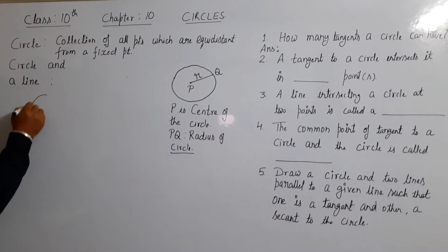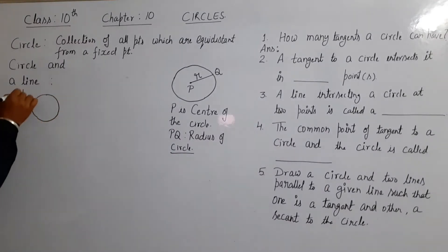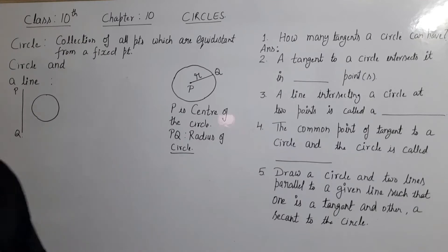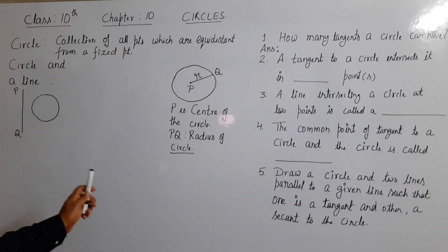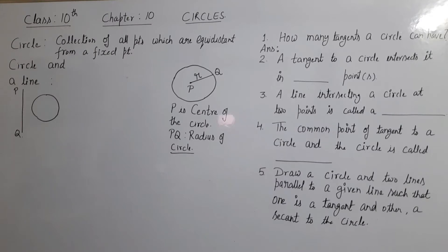I have drawn a circle and a line. You can easily see that line PQ and the circle do not touch each other or do not intersect. In this case, we say that PQ is a non-intersecting line with respect to the circle.